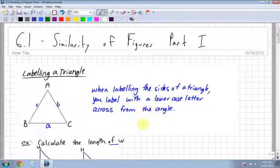Section 6.1 is similarity of figures, and I'm going to go through part 1 and part 2. First thing I want to look at is how to label a triangle. When labeling the sides of a triangle, you label with a lowercase letter across from the angle.